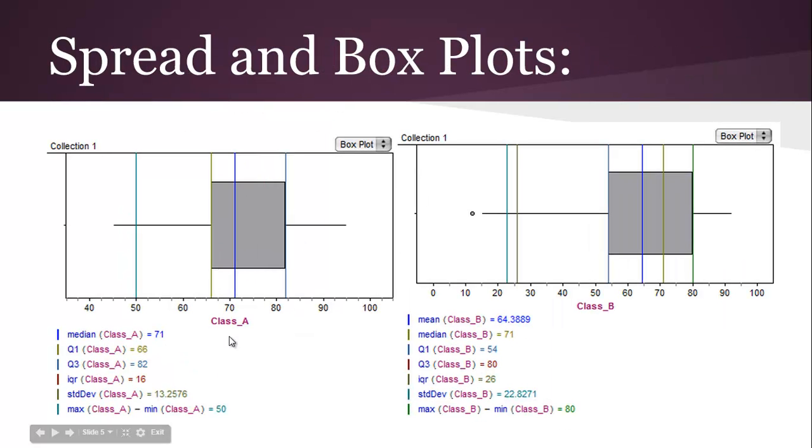Spread and box plots. If you look at the box plots, we've got the median, mean on here, Q1, Q3, IQR, standard deviation, and then the range, so we do the max minus the min. You can see the standard deviation is different, it's a lot more consistent in class A. The IQR is a lot lower, more consistent in class A, and you can see where Q1 and Q3 really make up the IQR. The range is lower in class A than class B, but that does have a lot to do with the outliers.